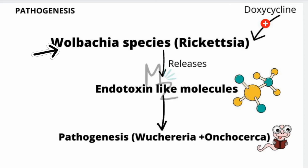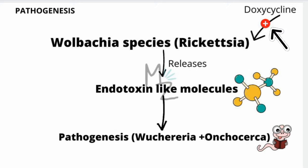Regarding pathogenesis: Wolbachia species are Rickettsia-like bacteria found intracellularly within filarial nematodes such as Wuchereria and Onchocerca. Wolbachia release endotoxin-like molecules thought to play a role in the pathogenesis of these infections. Evidence includes the use of doxycycline, which kills the Wolbachia, resulting in a reduction in microfilariae numbers and in the inflammatory response.